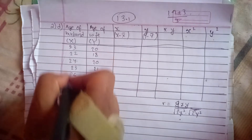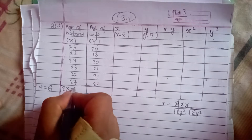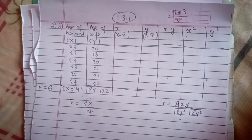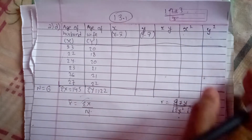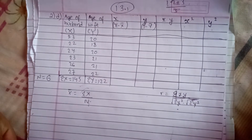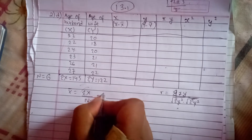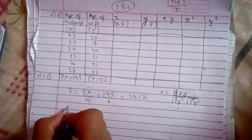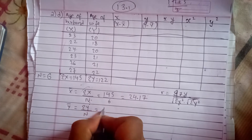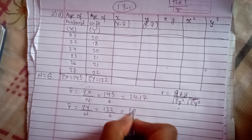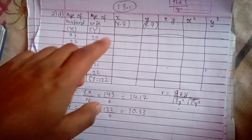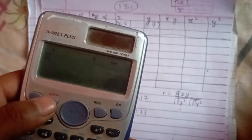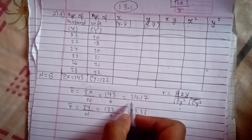Summation of x is equal to 145 and sum of y is equal to 122. The number of data n is equal to 6. So x̄ = 145/6 and ȳ = 122/6 = 20.33. The mean x̄ is approximately 24.17.